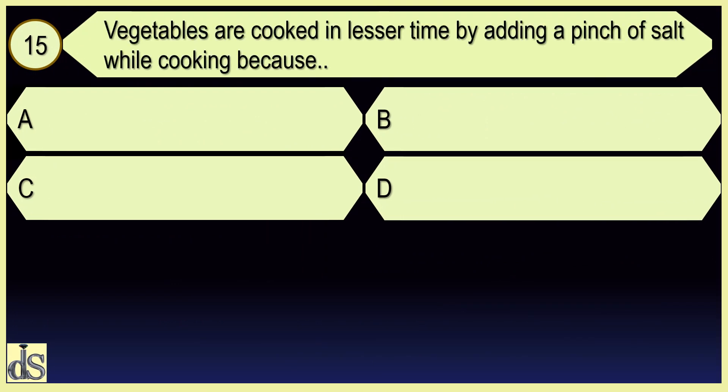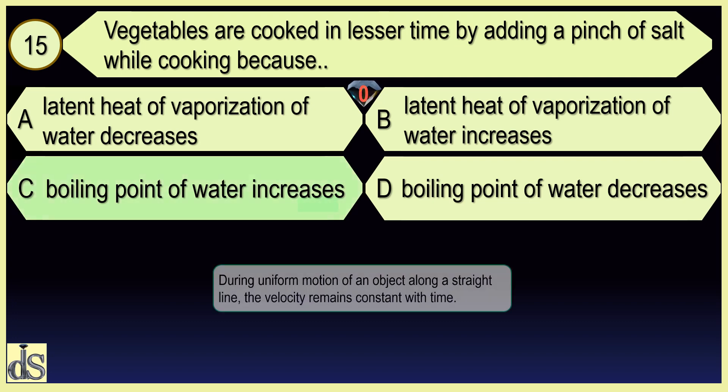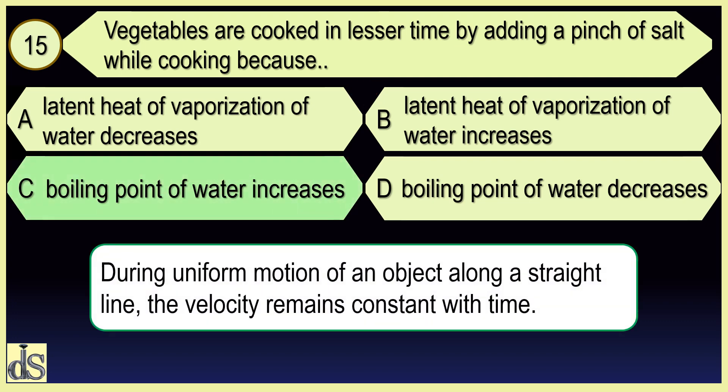Vegetables are cooked in lesser time by adding a pinch of salt while cooking because the boiling point of water increases.